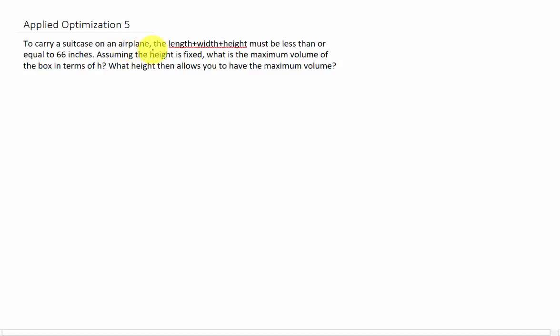To carry a suitcase on an airplane, the length plus width plus height must be less than or equal to 66 inches. Assuming the height is fixed, what is the maximum volume of the box in terms of h?